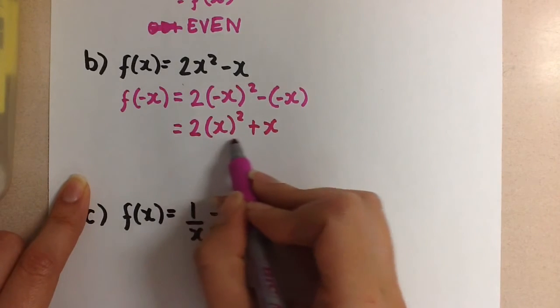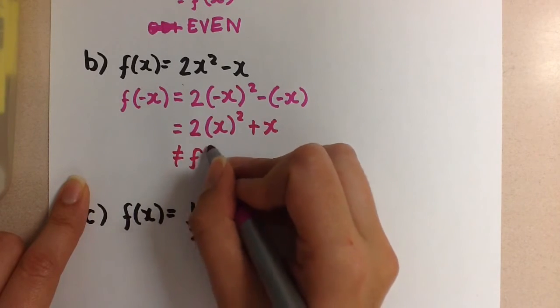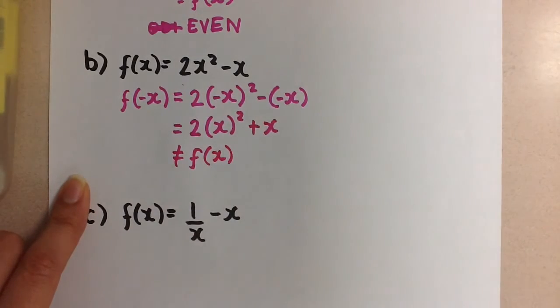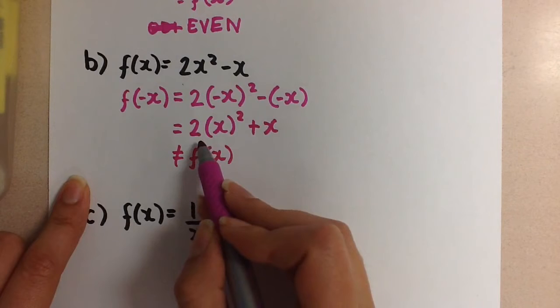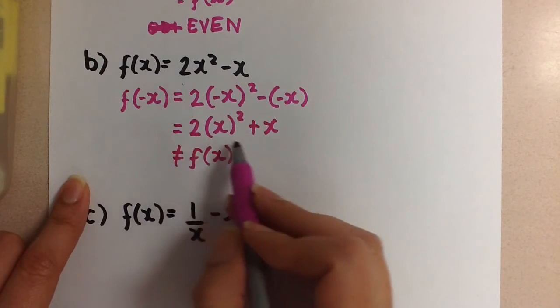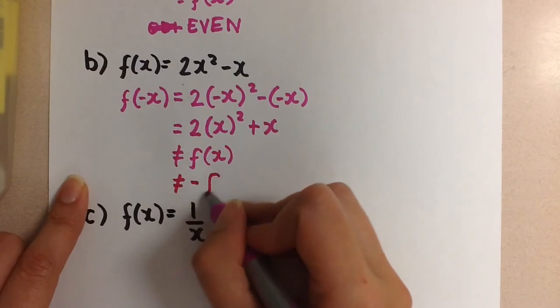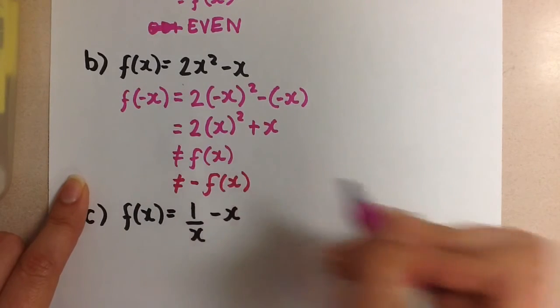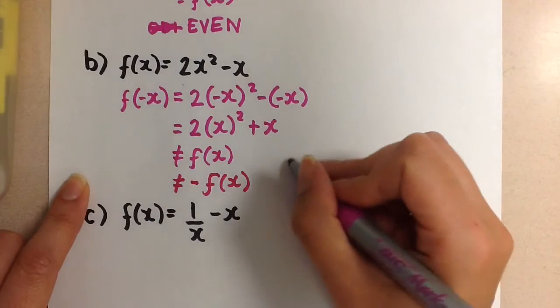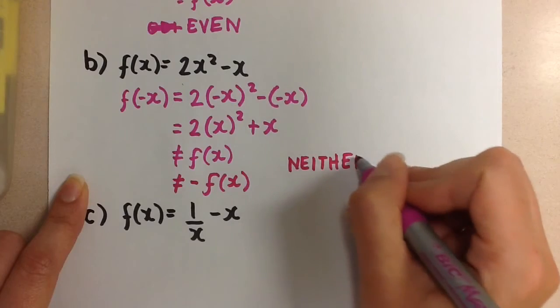So this equation that we have here is not the original equation. So we know that it's not even. And if we were to factor out a negative here, we would still not get the original equation back. So this is also not equal to -f(x). Which means it's not odd either. So this equation is neither even nor odd.